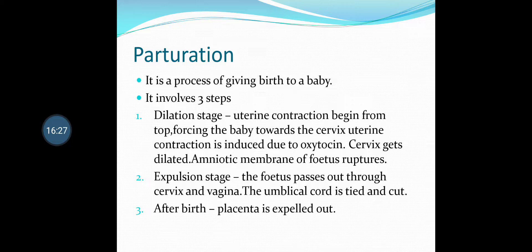The second stage is the expulsion stage: the fetus passes out through the cervix and vagina, and the umbilical cord is tied and cut. The third stage is afterbirth: the placenta is expelled out.